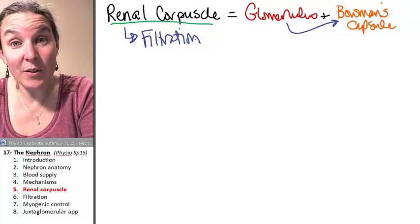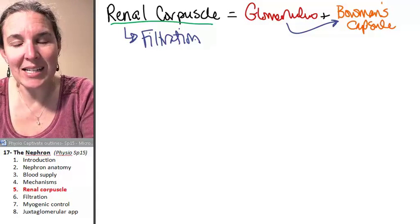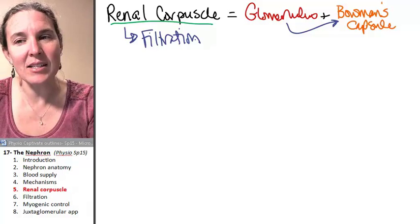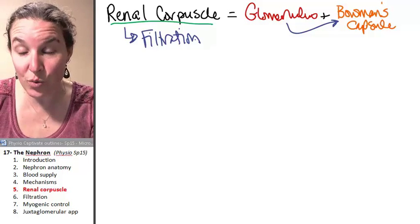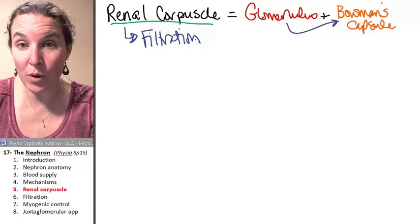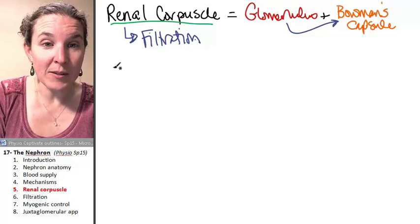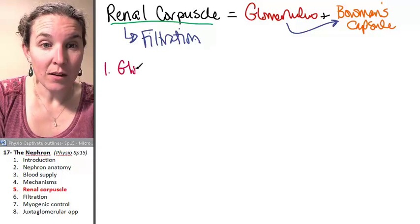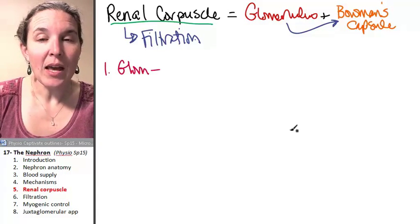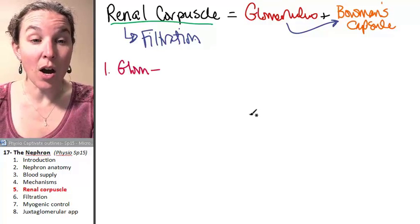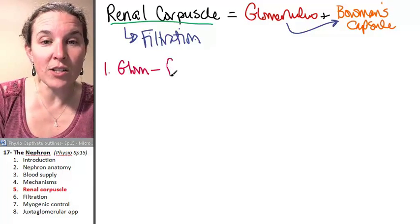We'll look at the mechanics of filtration in the next section, but the anatomy of this is extremely important. First of all, let's talk about the glomerulus. Glomerular capillaries are not normal capillaries — they're called fenestrated capillaries.